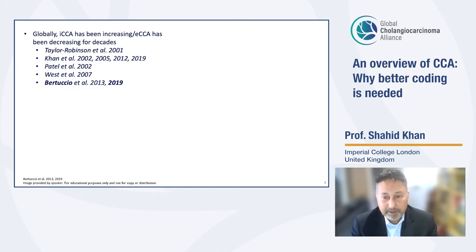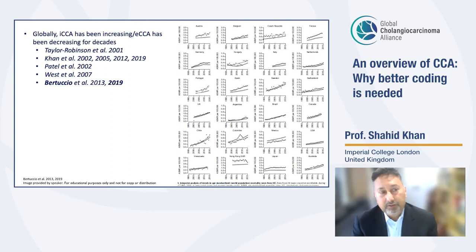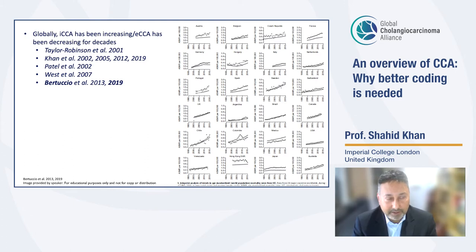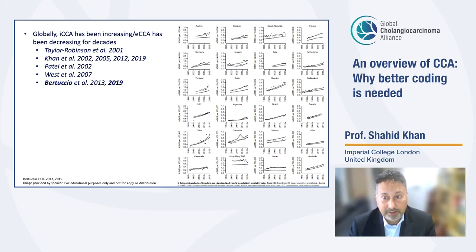There have been studies going back over 20 years now showing that cholangiocarcinoma mortality and incidence rates seem to be increasing globally. Most recently, this paper from Berticcio's group shows that extra-hepatic cholangiocarcinoma is decreasing or relatively stable, whereas intra-hepatic cholangiocarcinoma seems to be increasing. This figure shows age-standardized mortality rates from many countries around the UK as well as Japan, Australia, Hong Kong, and South America, across the EU for approximately a 20-year period from the mid-90s, showing that intra-hepatic cholangiocarcinoma mortality rates in men and women have increased significantly.